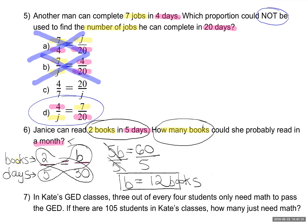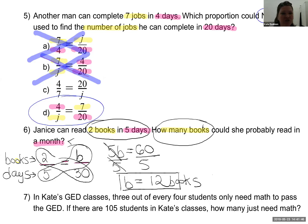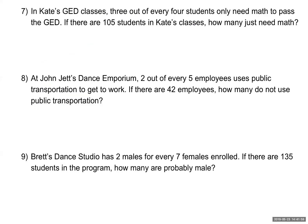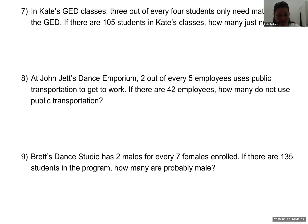This is my preferred way to solve proportion problems. Tape diagrams are useful when first visualizing things, but not practical when numbers get big — how many pictures are you going to draw? So it helps to graduate to algebra. In Kate's GED classes, three out of every four students only need math to pass the GED. If there are 105 students in Kate's classes, how many just need math? My numbers three and four are not clearly labeled, so I need to think about what they represent.